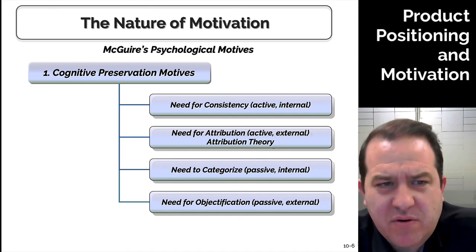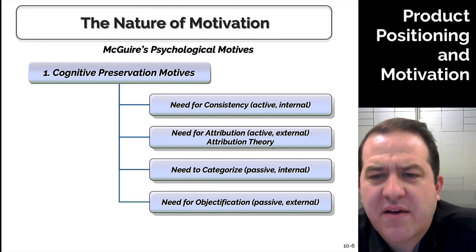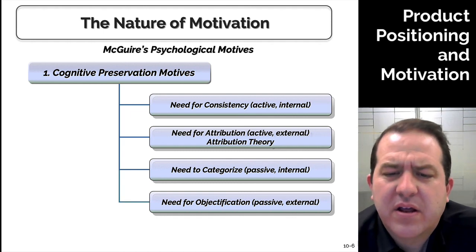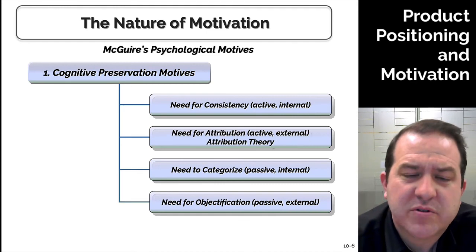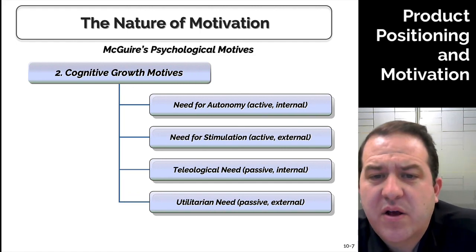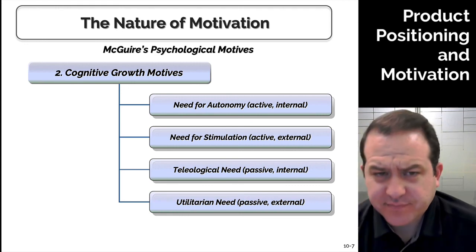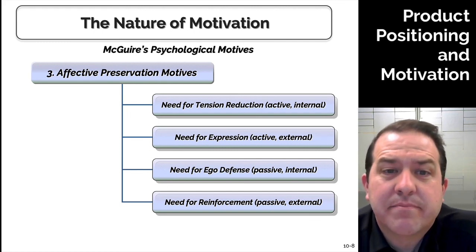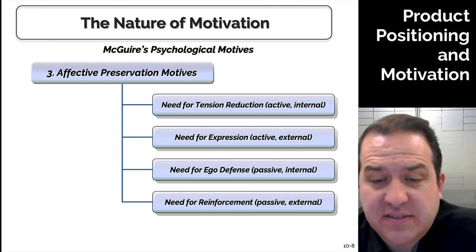McGuire describes four cognitive motives. First are cognitive preservation motives: the need for consistency (active and internal), attribution — tying things to other things — categorization, and objectification (passive and external, making a decision on something). Then cognitive growth motives: need for autonomy, stimulation, a teleological need, and a utilitarian need — for someone who wants to grow in intelligence. Then affect, or emotional preservation motives: need for tension reduction, need for expression, need for ego defense, and need for reinforcement. That last one is really important — people want to feel good about what they've done.